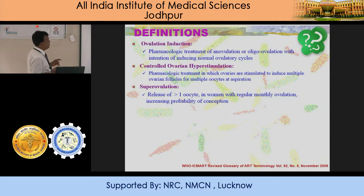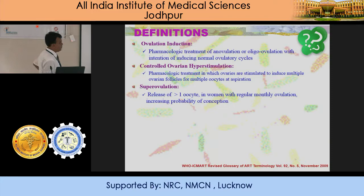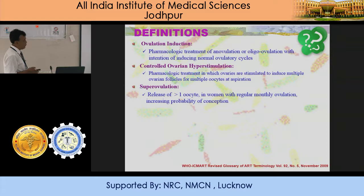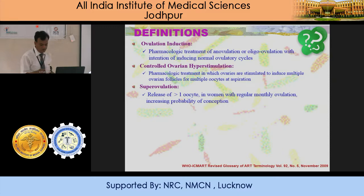When you are talking about controlled ovarian hyperstimulation, that is a pharmacological treatment in which ovaries are stimulated to induce multiple ovarian follicles for multiple oocyte aspirations — that is the IVF cycle. When we talk about superovulation, that means you need to release more than one oocyte in women with regular monthly ovulation. Instead of one follicle, a number of follicles develop, so the chances of conception are more.